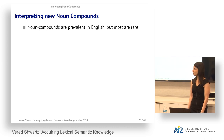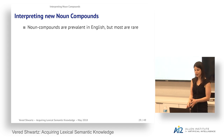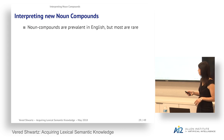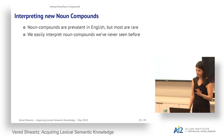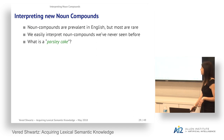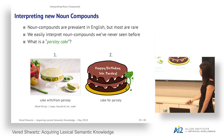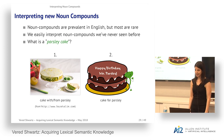Noun compounds are common in English but many are infrequent in corpora, making distributional representation of the full compound difficult. We also seem to be good at interpreting unseen noun compounds. For example, 'parsley cake' — which I heard of a few years ago — could mean a cake with parsley or a cake for parsley. We can easily determine the left interpretation is correct, even without ever having observed this noun compound before.